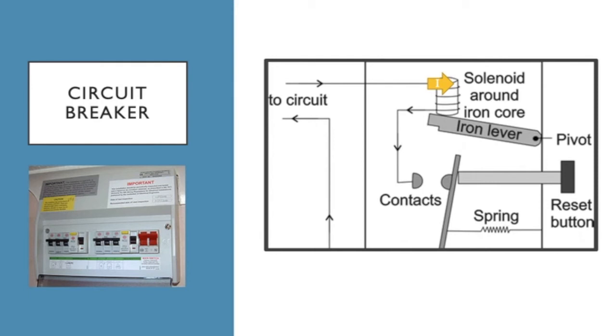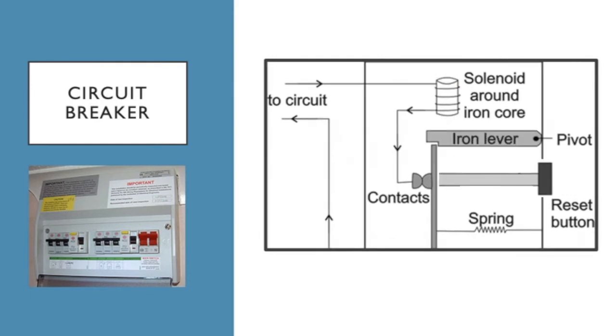Then what you would do is you'd press the reset switch, everything would go back to normal once you'd fixed the appliance, whatever it was that was causing the problem. Now circuit breakers have kind of replaced fuse boxes.